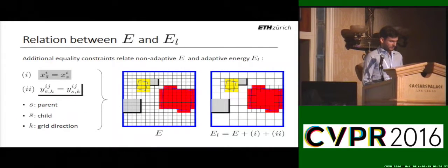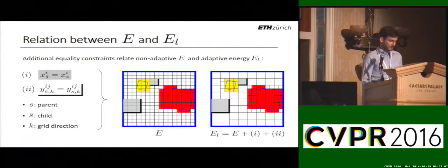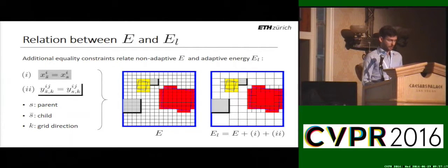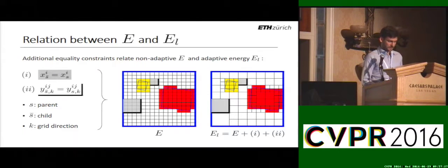The relation between the adaptive and the baseline method is established via additional equality constraints on the indicator and transition variables. Here, S-bar denotes a descendant of a bigger voxel and K denotes a grid direction. As for the transition variables, since we are working with forward differences, only the particular boundaries are highlighted in black. In this interpretation, the new energy can be seen as a constrained version of the baseline energy, which is defined over a fixed grid.